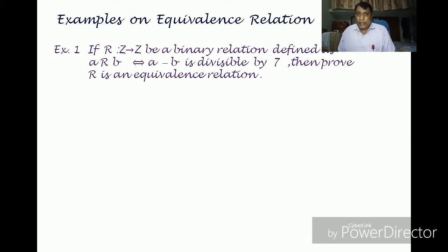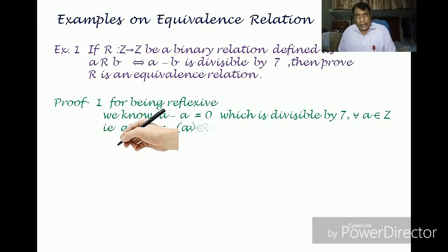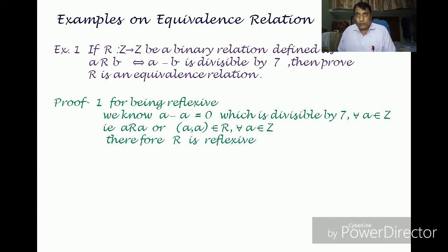The proof is as follows. Firstly, for being reflexive, we know that a minus a equals 0 for every a belonging to Z. And 0 is divisible by 7. So for every a belonging to Z, a is related to a. Therefore R is reflexive.